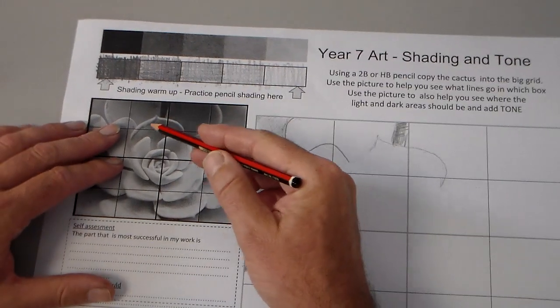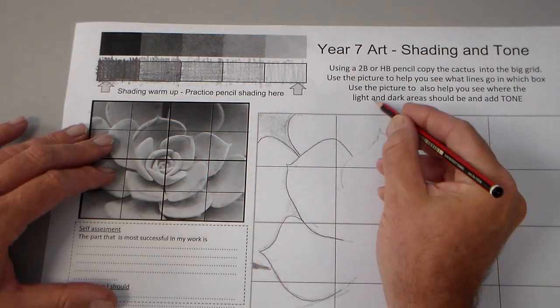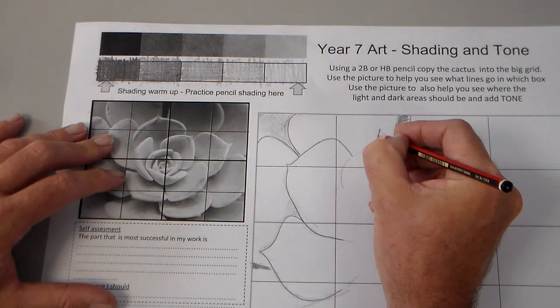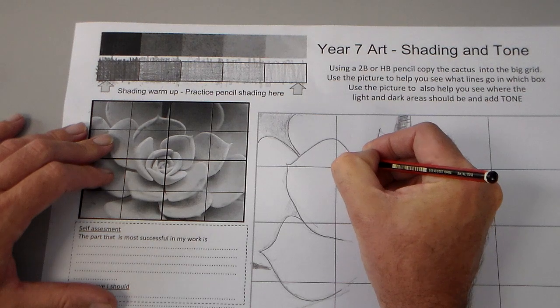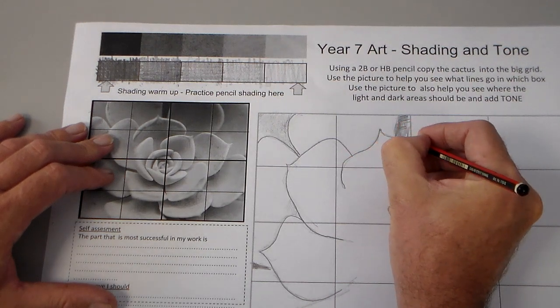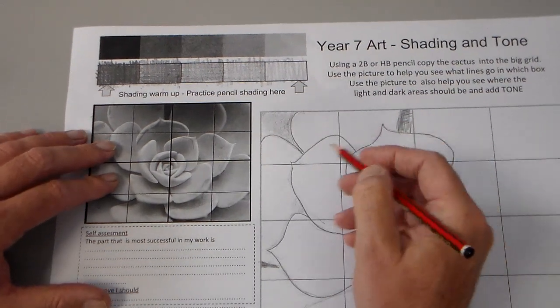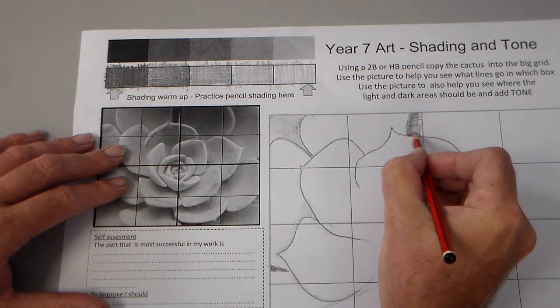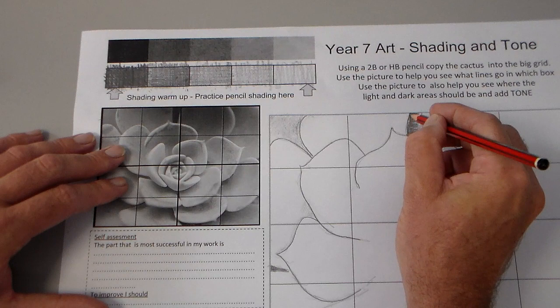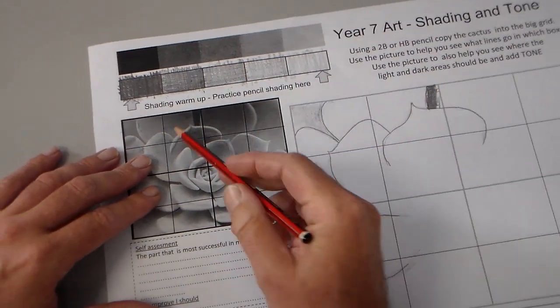But look at each square. For example, that square, look at the lines, the outlines of the shape, add those outlines of the shape and then into the squares that are adjacent to them. And then once you've got those you can start to add this shading detail in lighter and dark shades.